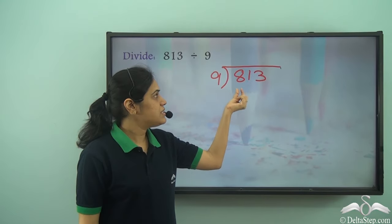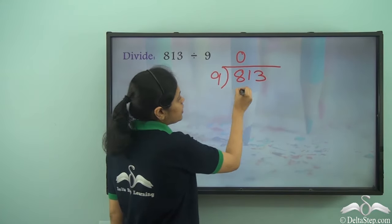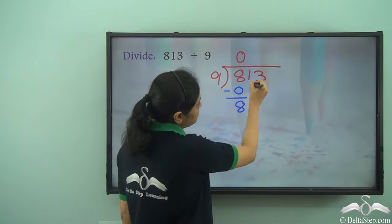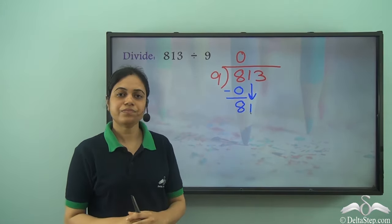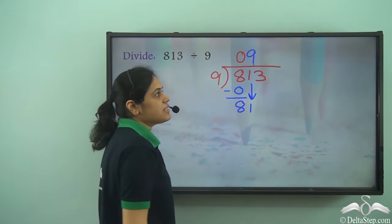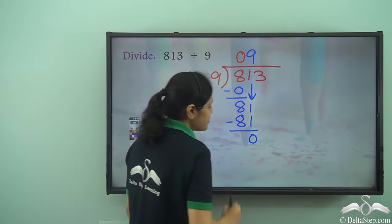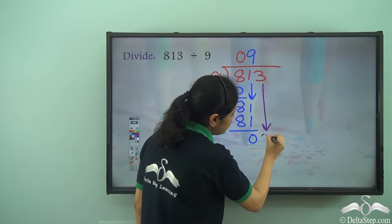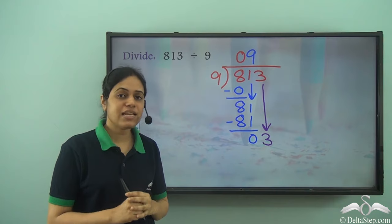How many times does 9 go into 8? Zero times. 0 into 9 is 0. I subtract it to get 8 which is less than 9. Now I bring this 1 down. I have 81. How many times does 9 go into 81? I know 9 into 9 is 81. So I subtract it to get 0. Next, I need to bring this 3 down. How many times does 9 go into 3? Zero times, because 3 is less than 9.